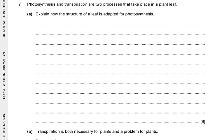Air spaces in the spongy mesophyll allow diffusion of gases. Chloroplasts are present in palisade cells, spongy cells, and guard cells to absorb light. Chloroplasts are most dense in the palisade mesophyll. Palisade cells are in the upper part of the leaf, so they receive more light. Xylem vessels bring water from the soil. Epidermal cells have no chloroplasts and are transparent, allowing light to reach the underlying palisade cells.